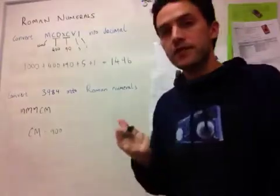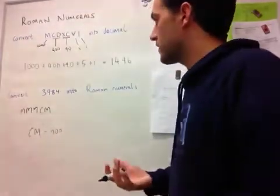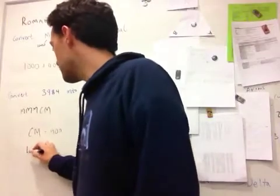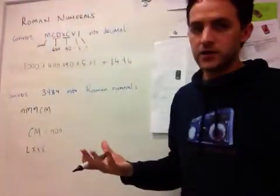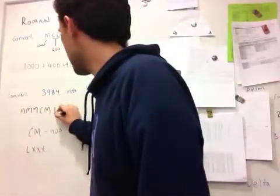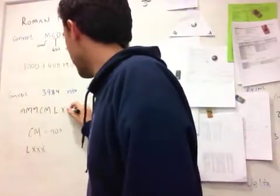And then we've got the 84 to make up. So 84 we do with an L and 3 X's. We don't do any subtractive rule here. It's just going to be 80 written like this.